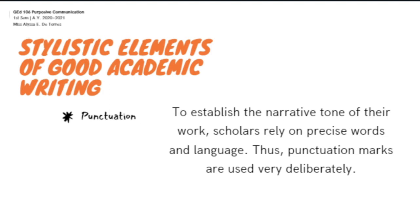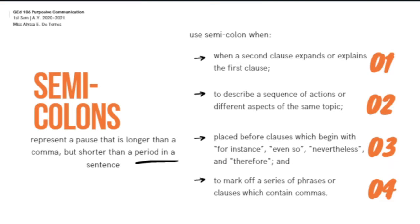The next stylistic element is punctuation. To establish the narrative tone of their work, scholars rely on precise words and language. Thus, punctuation marks are used very deliberately. The first punctuation is the semicolon, which represents a pause longer than a comma but shorter than a period. In general, there are four grammatical uses of the semicolon: when a second clause expands or explains the first; to describe a sequence of actions or different aspects of the same topic; placed before clauses which begin with 'for instance,' 'even so,' 'nevertheless,' and 'therefore'; and to mark off a series of phrases or clauses which contain commas. If you are not confident about when to use semicolons, rewrite using shorter sentences or revise the paragraph.